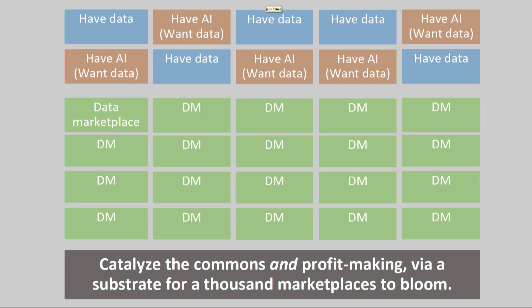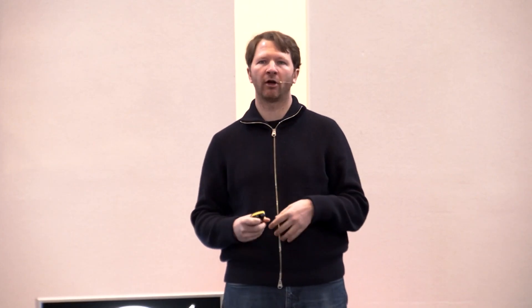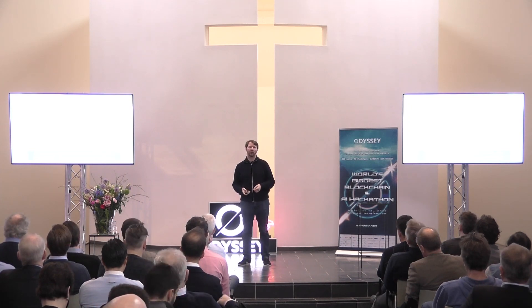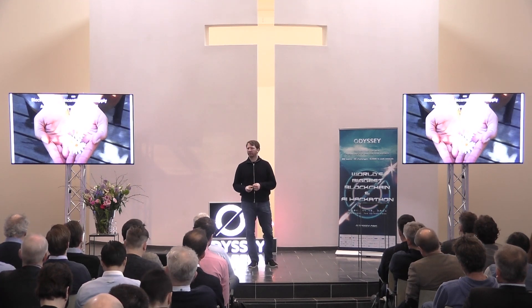Imagine we can catalyze the commons and the profit-making, with this substrate for 1,000 marketplaces to bloom — marketplaces for buying and selling data, not just raw data but also cleaned data, neural networks after they were trained, and other AI models. There are people that have data and people that want data, and in between we have a whole bunch of data marketplaces and the commons. Stuart Brand, the famous futurist thinker, has a quote: data wants to be free and it also wants to be expensive. It wants to be free because of the physics of bits; it wants to be expensive because the creators of the data need to get paid to feed their families. People downloading data get it for free, but the people serving up the data can feed their families because there are block rewards if you actually spend resources to help serve up the data.